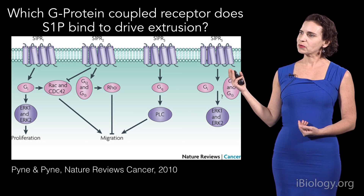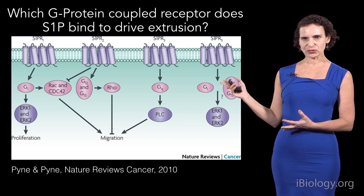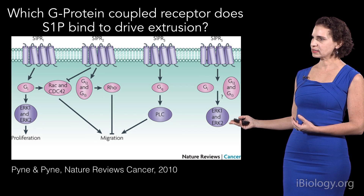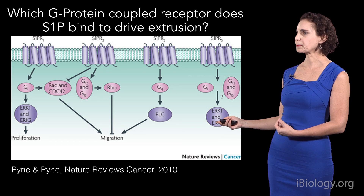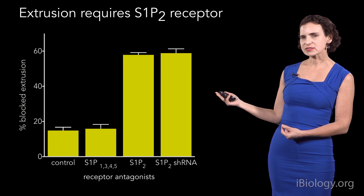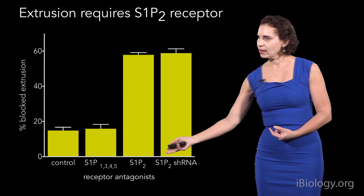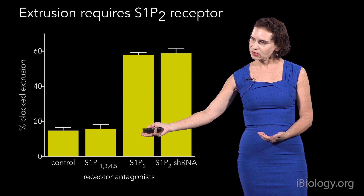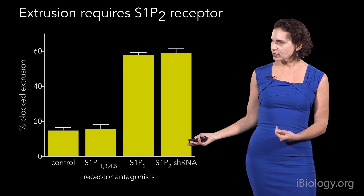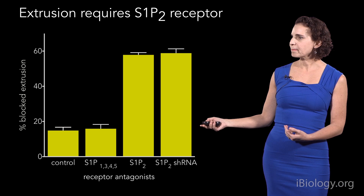Now we know the signal is a lipid called sphingosine-1-phosphate. There were known to be five different receptors that sphingosine-1-phosphate can bind to, and these are all G-protein-coupled receptors. We tested these different candidates to see which receptor might be binding to activate the extrusion. What we found is that extrusion requires the sphingosine-1-phosphate 2 receptor. Using antagonists to all the other receptors — 1, 3, 4, and 5 — does not block extrusion, similar to the control. However, antagonists to sphingosine-1-phosphate 2 or knockdown by shRNA block extrusion.